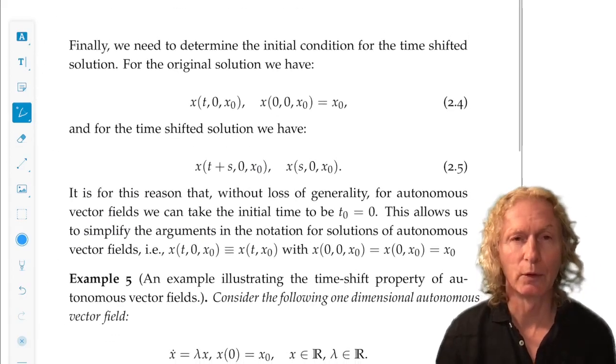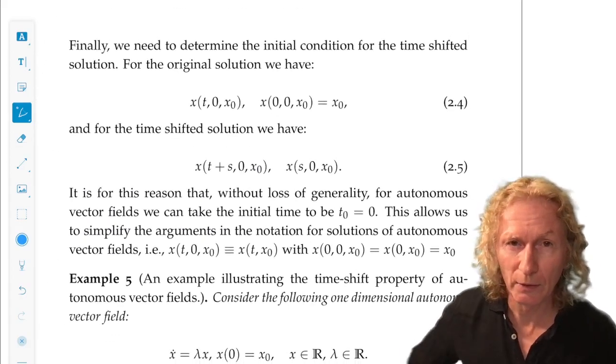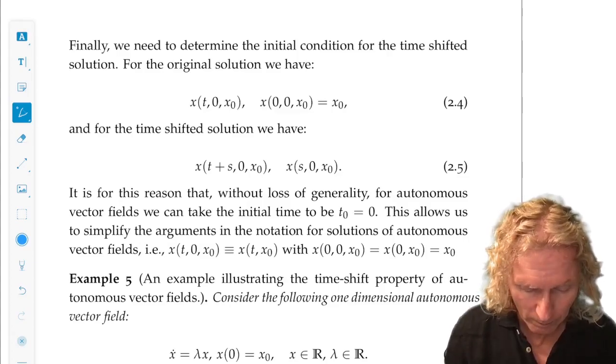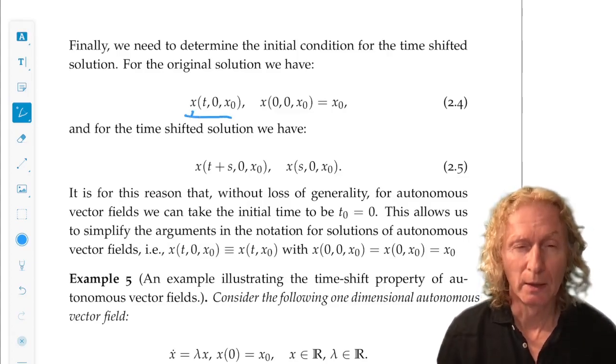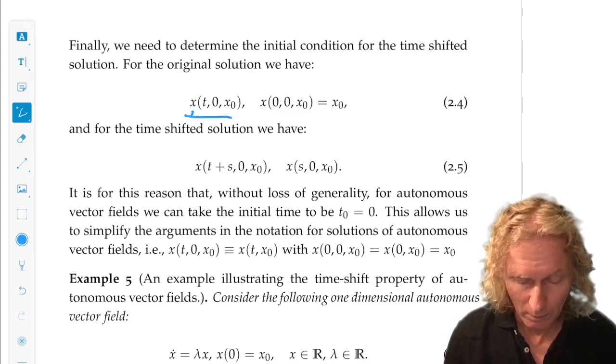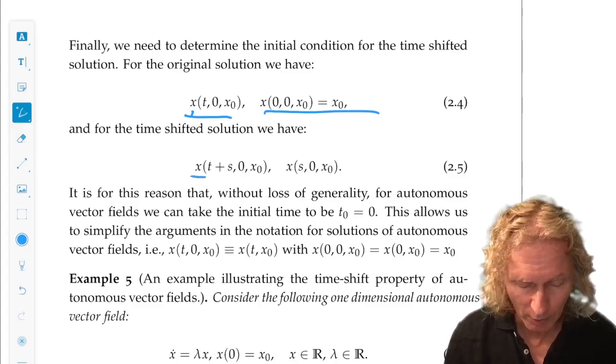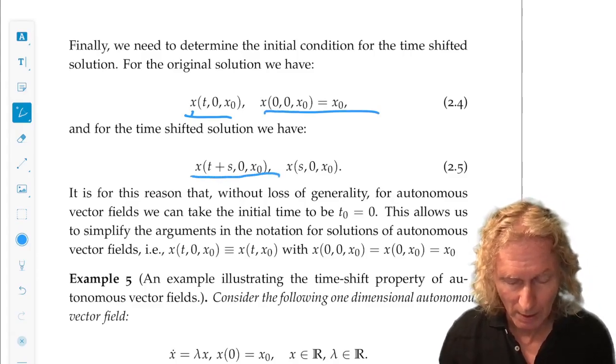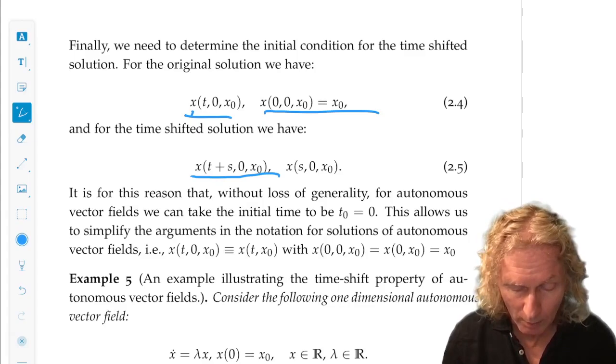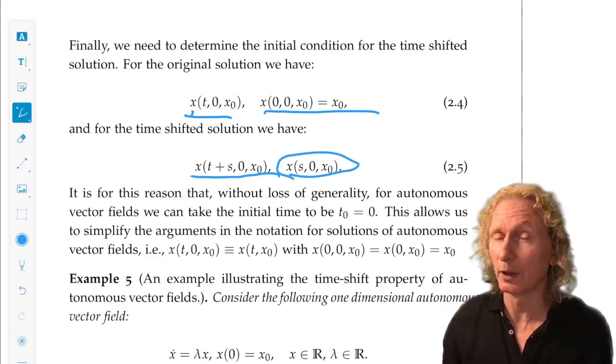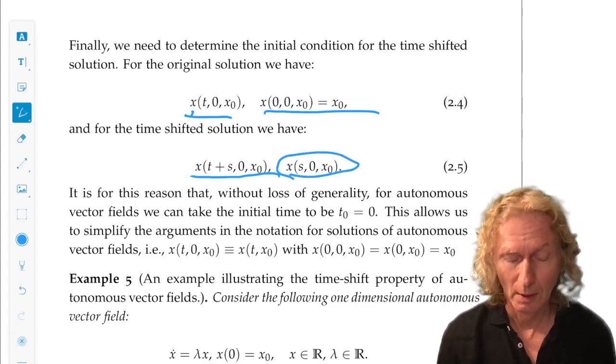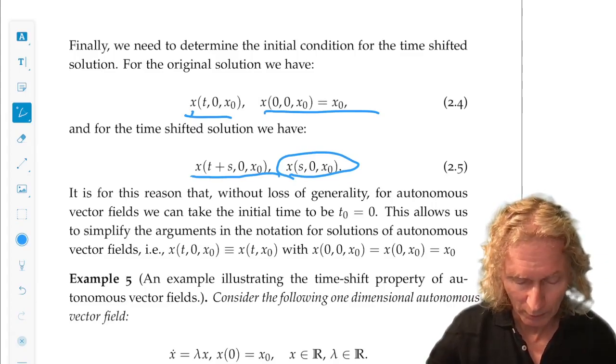So, time shifts the solution. If we have a solution x of t that at time 0 is x_0, then x at t plus s is a solution. But at time 0, it satisfies a different initial condition. Otherwise, we wouldn't have uniqueness of solutions.